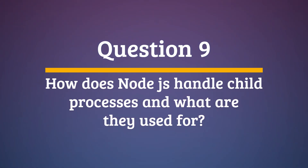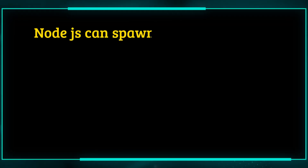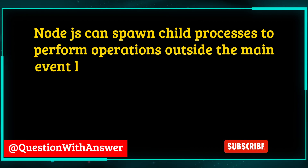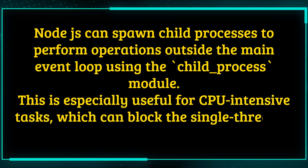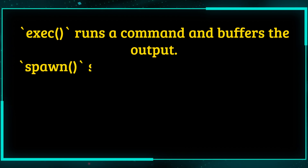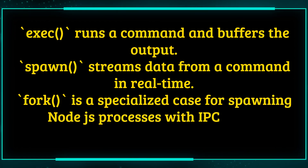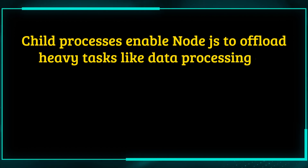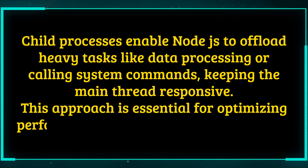Question 9. How does Node.js handle child processes and what are they used for? Answer. Node.js can spawn child processes to perform operations outside the main event loop using the child_process module. This is especially useful for CPU-intensive tasks, which can block the single-threaded event loop. There are several methods: exec (runs a command and buffers the output), spawn (streams data from a command in real-time), and fork (a specialized case for spawning Node.js processes with IPC — inter-process communication). Child processes enable Node.js to offload heavy tasks like data processing or calling system commands, keeping the main thread responsive. This approach is essential for optimizing performance in production environments.